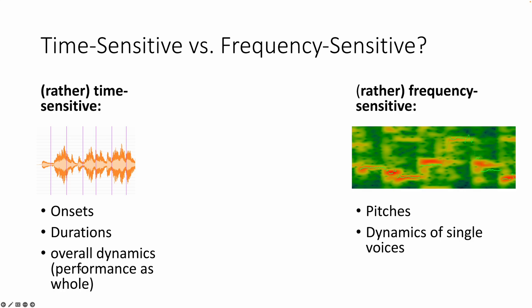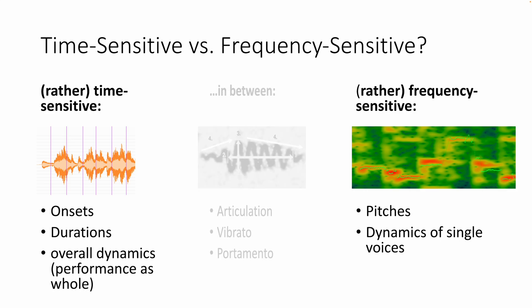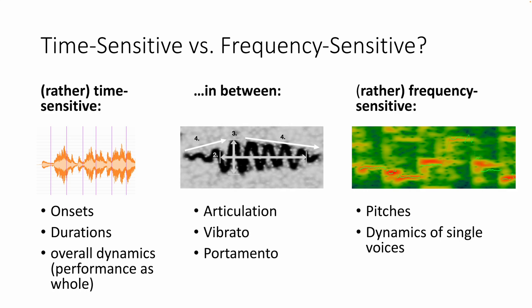By contrast, other elements are mainly characterized by their frequency contents rather than their precise onsets, such as pitches and dynamics of single voices. And of course, there are elements which operate somewhere in between, such as articulation, vibrato, and portamento of a single note, or to interconnect multiple notes. In fact, this may be the largest group of musical elements.